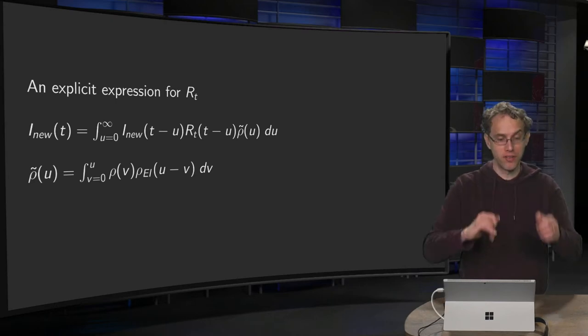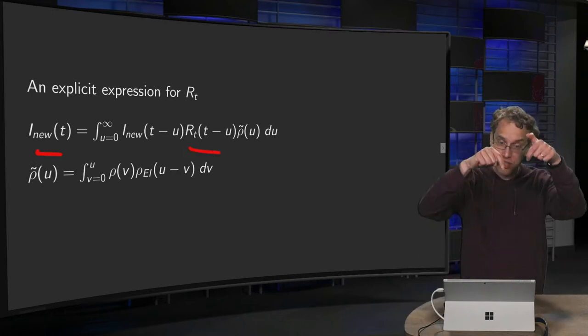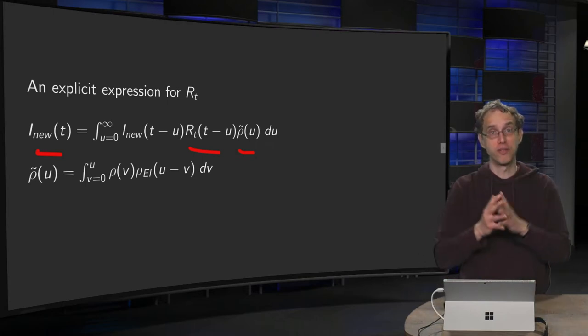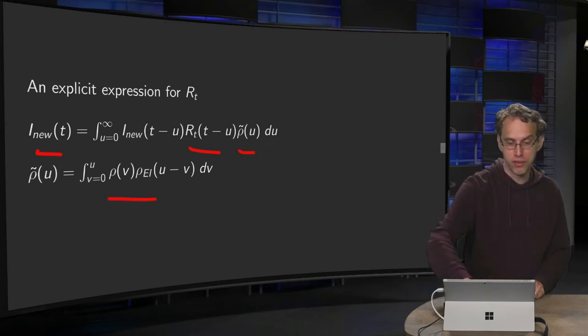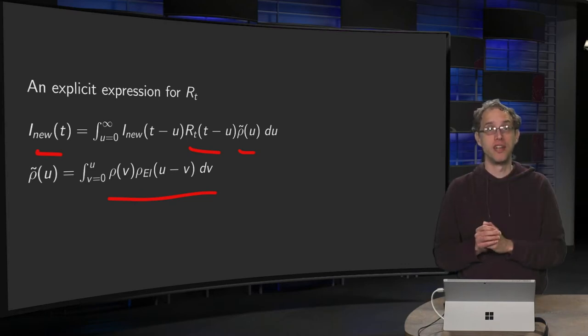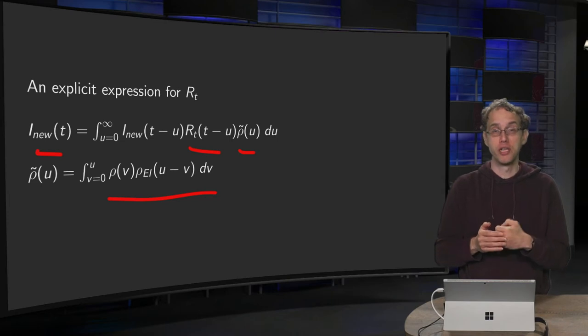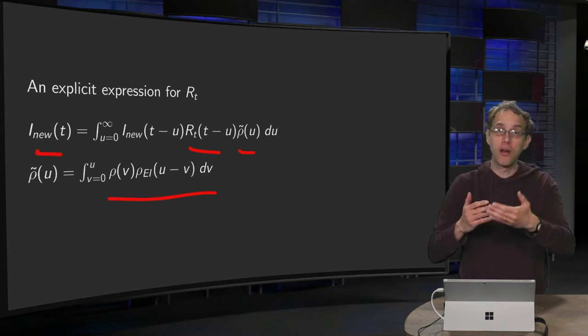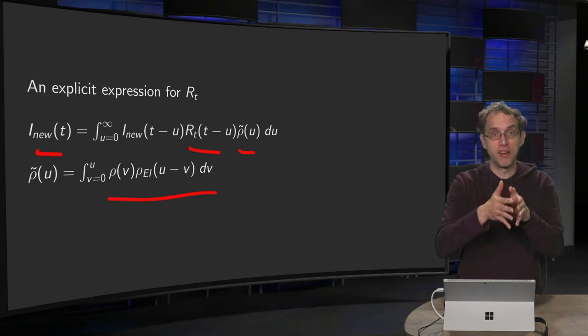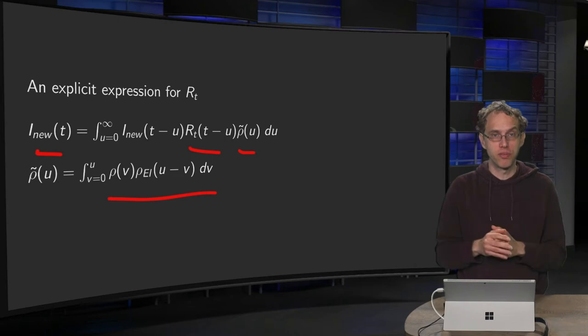First of all, what did we have? We had our i_nu. We had our reproduction number over here. It was inside the integral. We had some rho tilde of u, which is the convolution of the probability density rho and rho_ei, where rho_ei is the probability density that tells you how long it takes to go from the exposed to infected stage, and where rho is the probability density that tells you how long it takes that someone who is infected infects someone else.